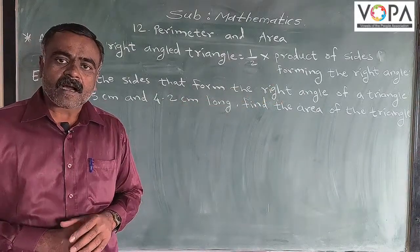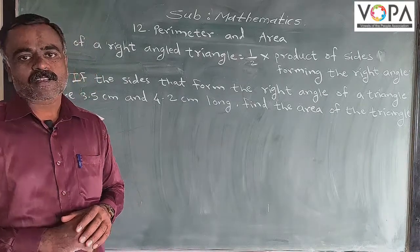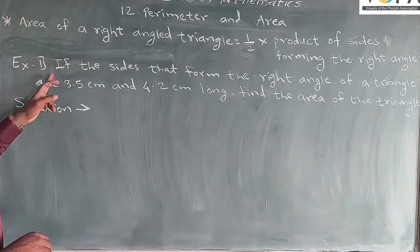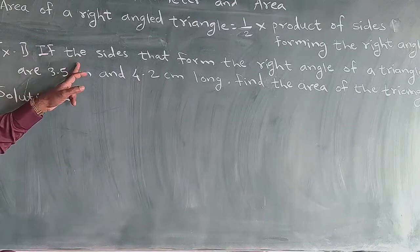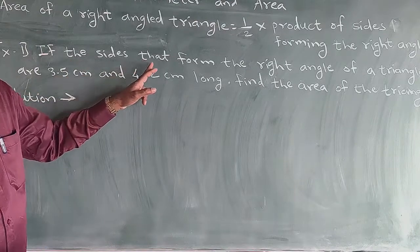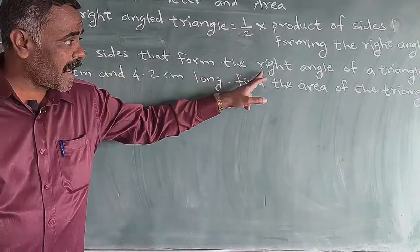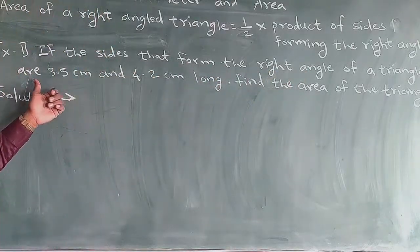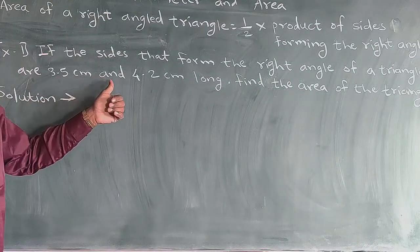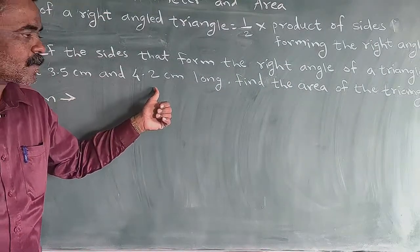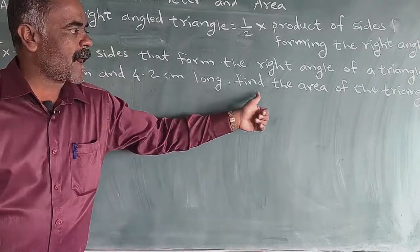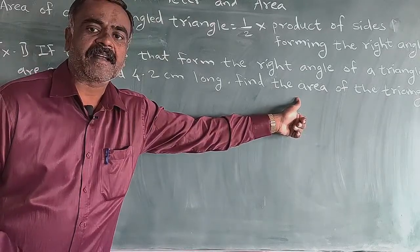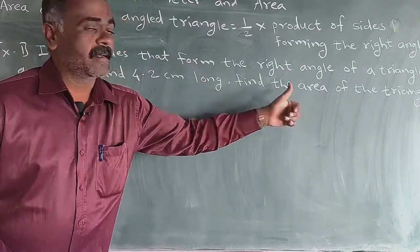See the example. The sides forming the right angle of a triangle are 3.5 centimeters and 4.2 centimeters long. So, find the area of the right angle triangle.